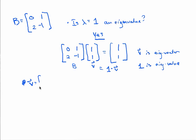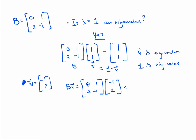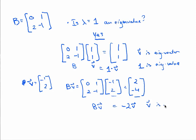Here's another vector to play with: negative 1, 2. If I take B times this vector — matrix 0, 1, 2, negative 1 times negative 1, 2 — I get: 0 times negative 1 plus 1 times 2, that's 2 in the first entry; 2 times negative 1 is negative 2, plus negative 1 times 2 is negative 4. Noting that this result equals negative 2 times the original vector, B times V equals negative 2 times V. So negative 1, 2 is an eigenvector for that matrix with an eigenvalue of negative 2.